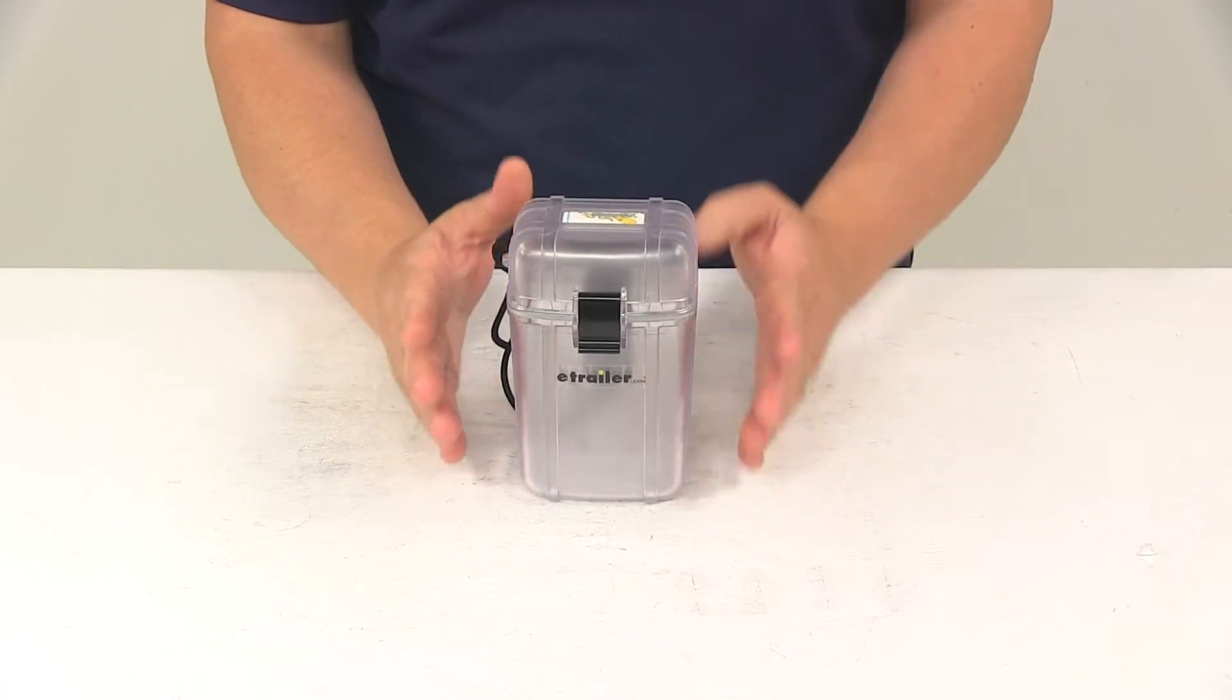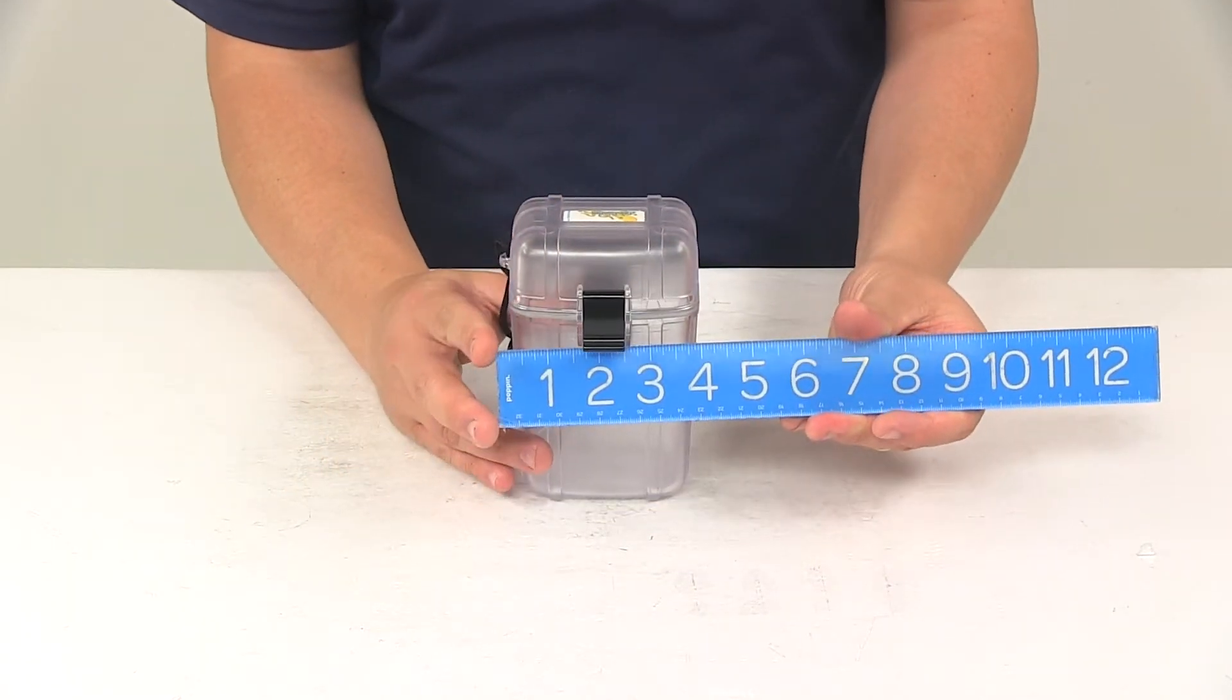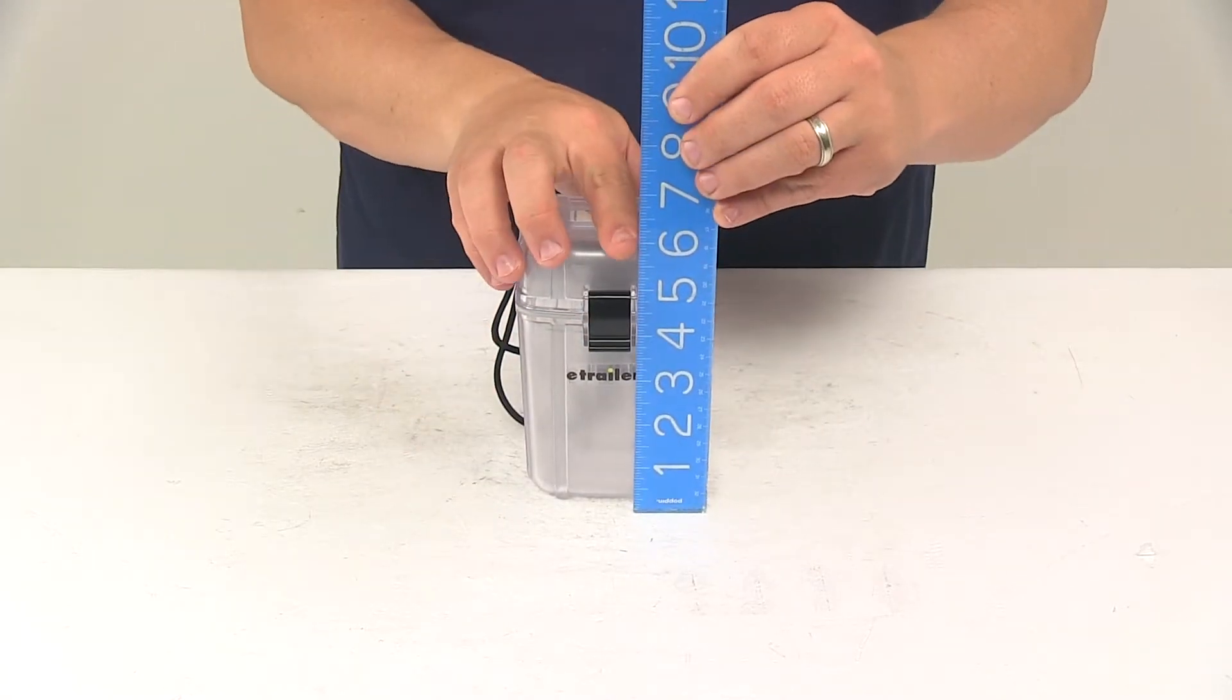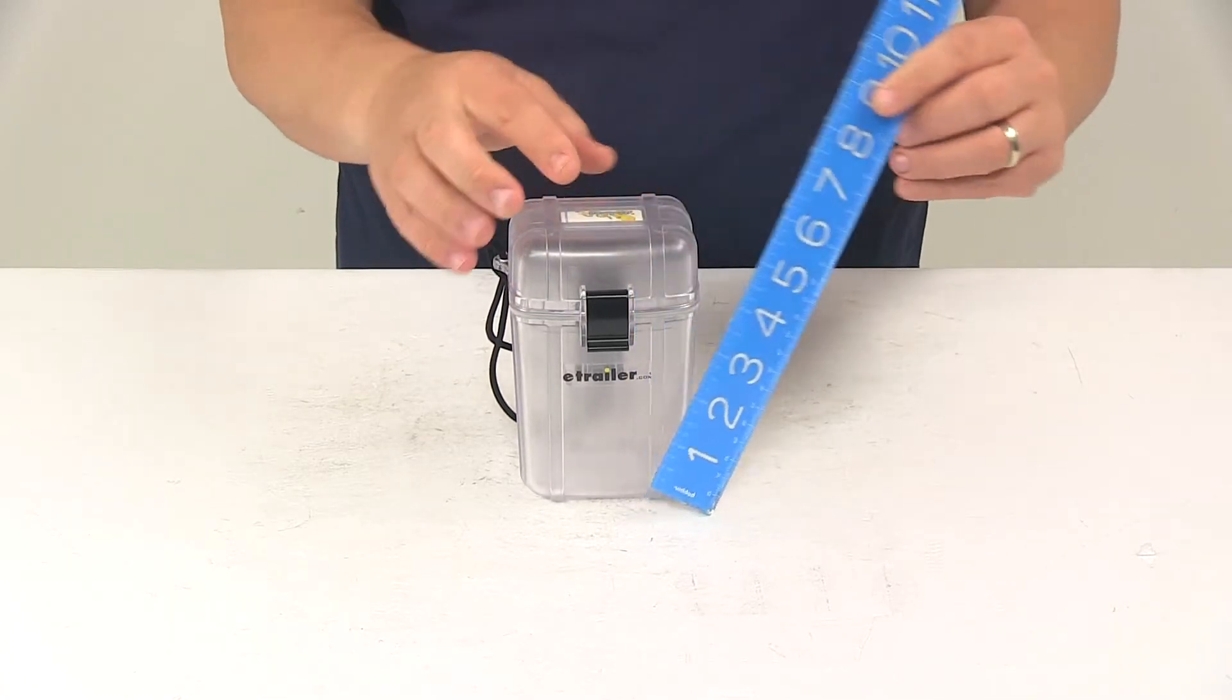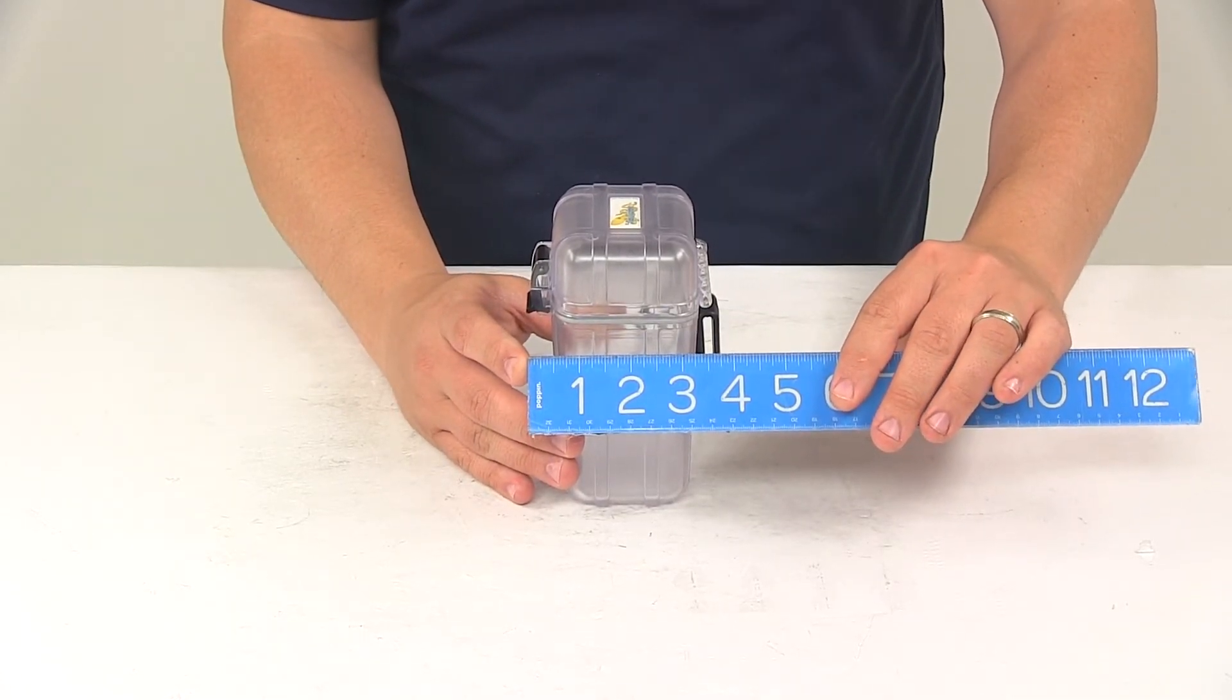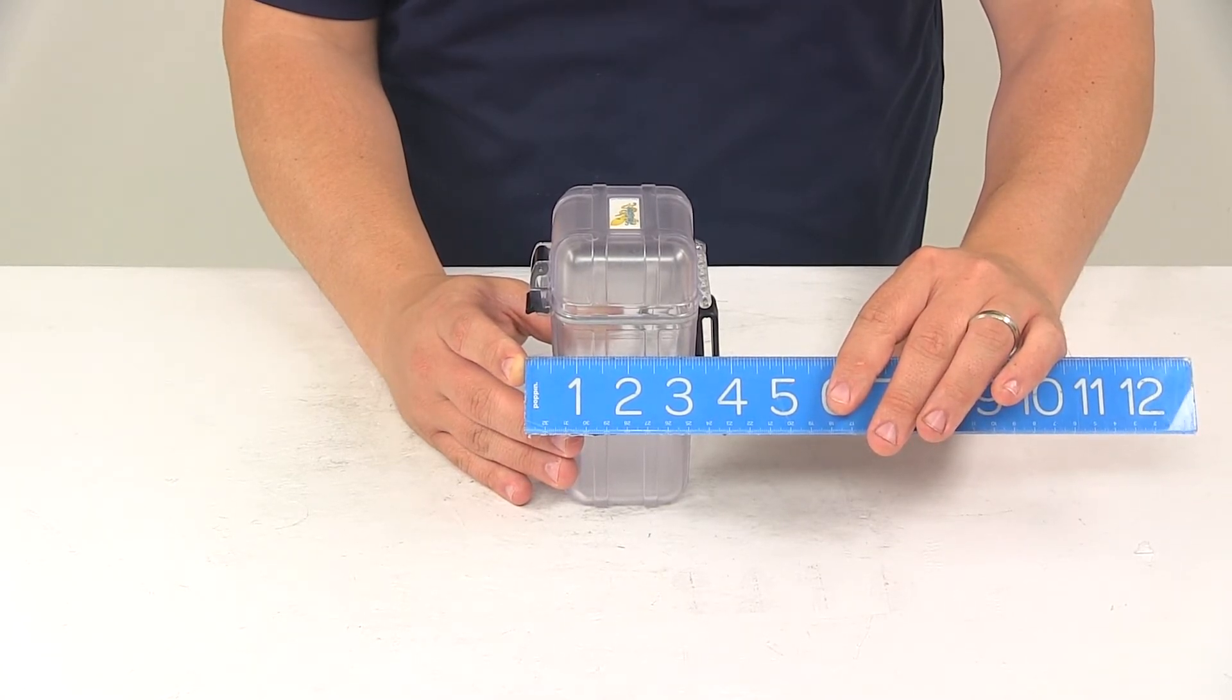When it comes to the dimensions here at the outer points of the box, going this direction, edge to edge, we're looking at about three and five-eighths of an inch. Overall height is about five and seven-eighths of an inch tall. Then going this direction, including the clip at the front all the way to the belt clip at the back, that's about four inches.